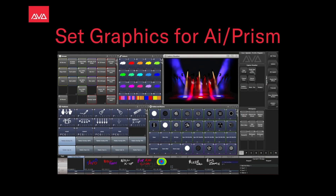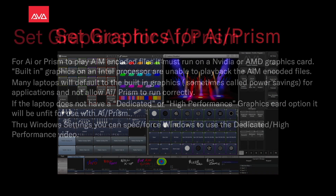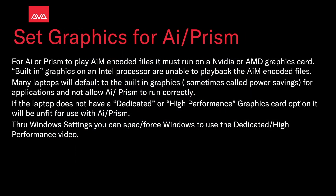Hey everybody and welcome to Mission Control for a quick tips video. In this video we're going to talk about set graphics for AI or Prism. For AI or Prism to play AIM encoded files it must be run on the NVIDIA or AMD graphics card. Built-in graphics on an Intel processor are unable to play back the AIM encoded files.